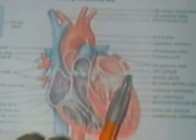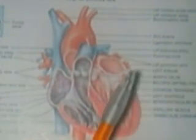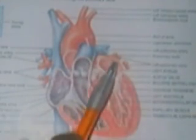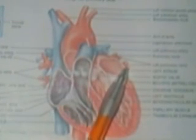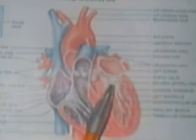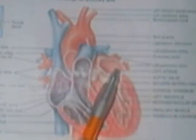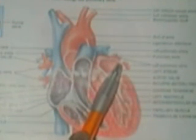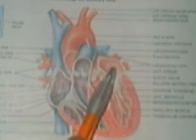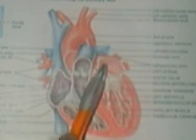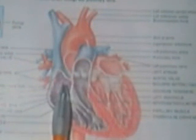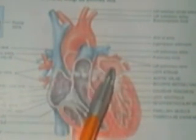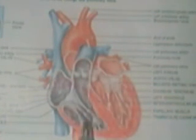The blood comes back to the left side of the heart via the left pulmonary veins — called pulmonary veins because they bring blood toward the heart. The left pulmonary veins take the blood into the left atrium, which will contract along with the right atrium. So both atria contract together, and both ventricles contract together.